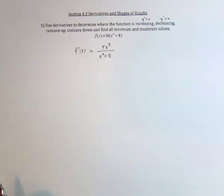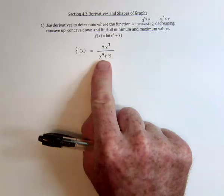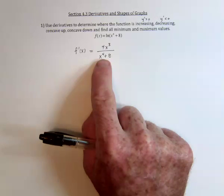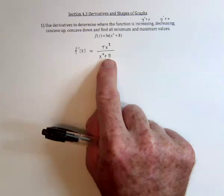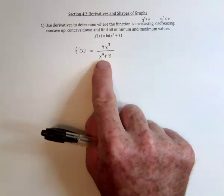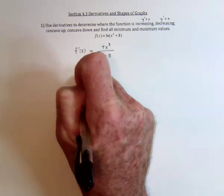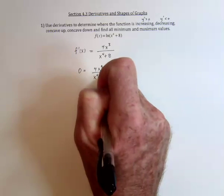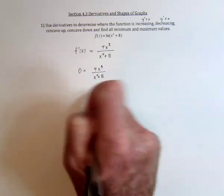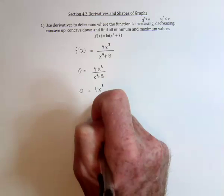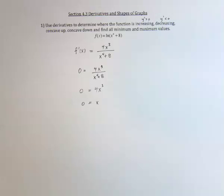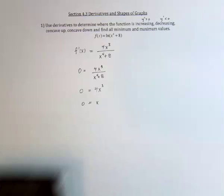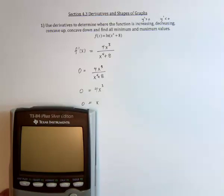There are two things to look for: where is the function undefined — so division by zero — and where does the derivative equal zero. Since this is an even power and a positive number, only complex numbers are going to be roots of that, so as far as real numbers we don't have to worry about it. The only way a fraction can equal zero is if the numerator equals zero, and since we're dealing with only real numbers, no complex roots, x equals zero is the only place.